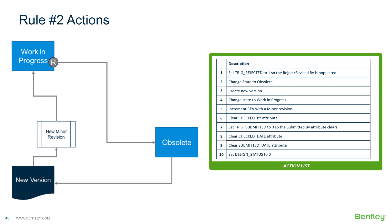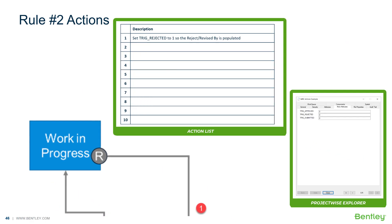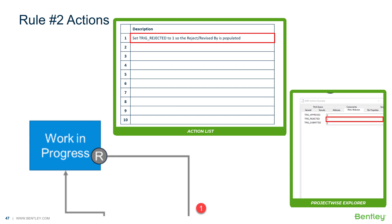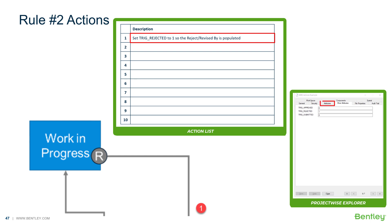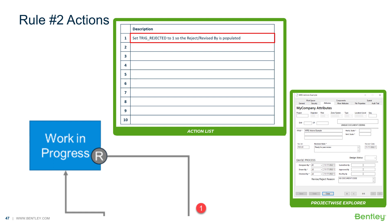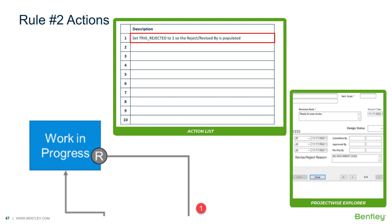We repeat the same technique for rule number two. There are 10 actions needed for rule number two. The first step is to set the trig rejected attribute to the value of one, which will trigger other attributes. On the attributes tab, the trig rejected will trigger the reject revised by using a stored procedure to fill in the current user's title block date. Next, the revised reject by change triggers the reject and revised by date, which updates to the current date and time.